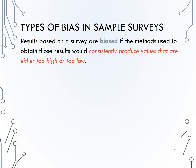Results based on a survey are considered biased if the methods used to obtain those results would consistently produce values that are either too low or too high. In other words, the statistics from these samples will consistently be above or below the parameter we are trying to estimate.